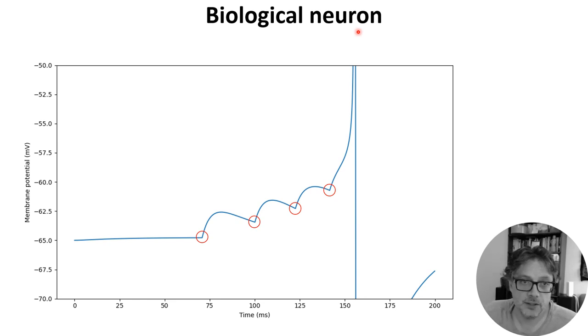Each incoming spike causes a transient rush of incoming current. For the first one, it's not enough to cause the neuron to spike, and after a while, the membrane potential starts to decay back to its resting value.